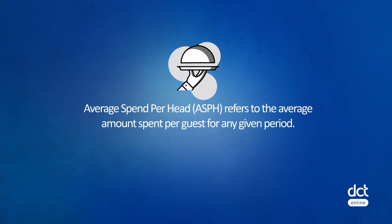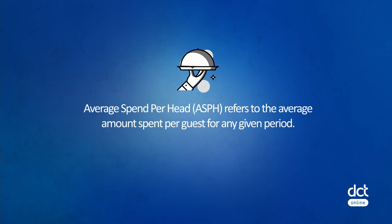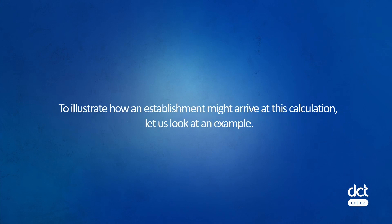Average Spend Per Head refers to the average amount spent per guest for any given period. This may also be referred to as APC in this industry. To illustrate how an establishment might arrive at this calculation, let us look at an example.